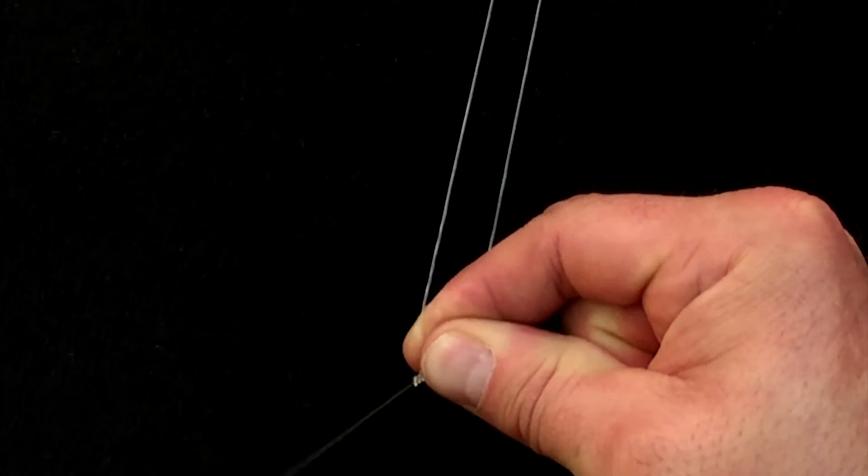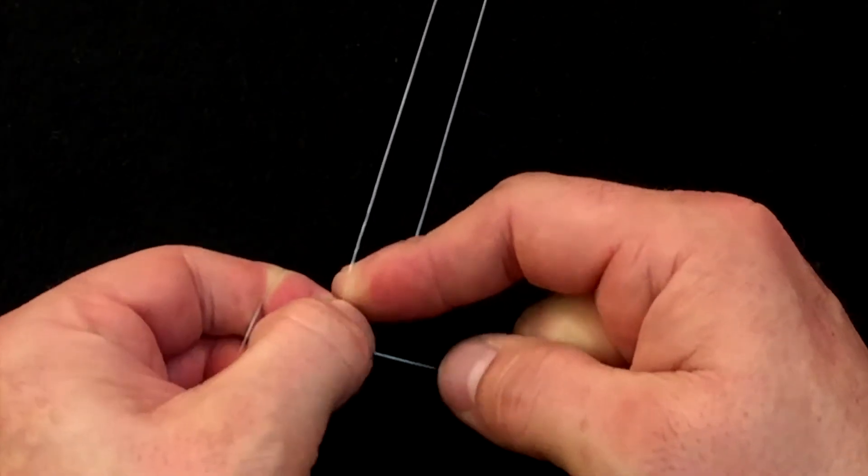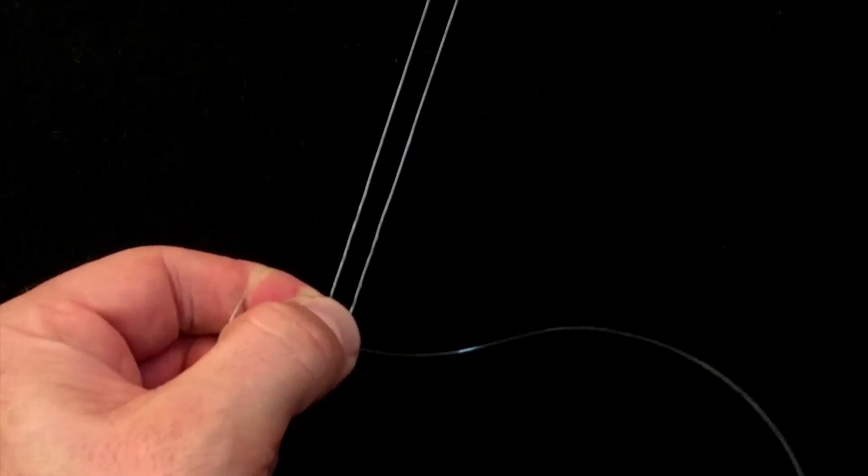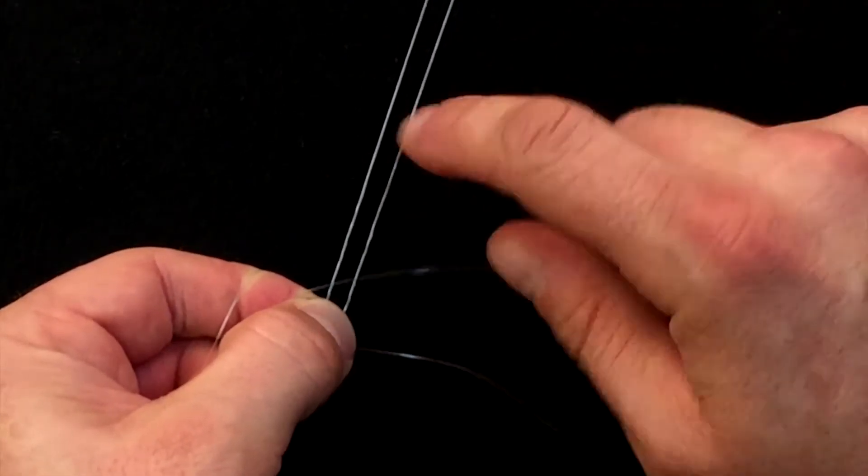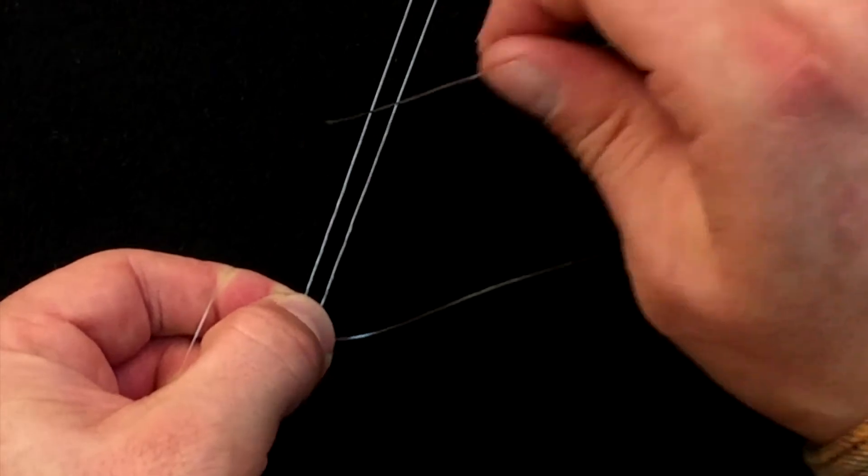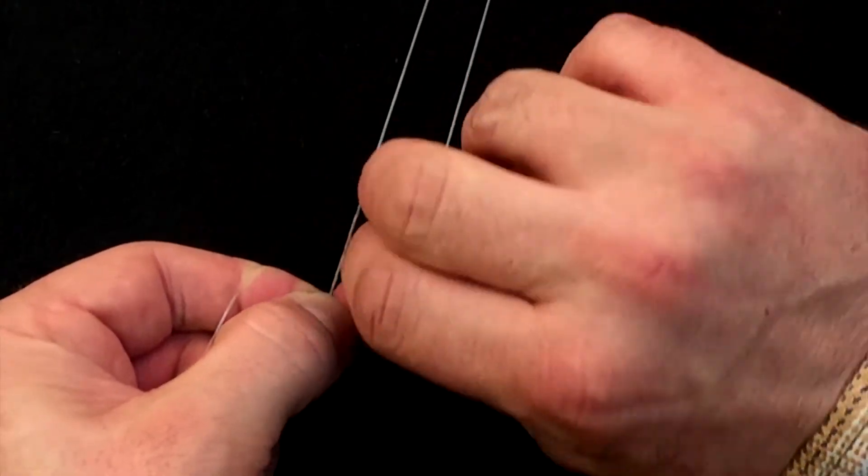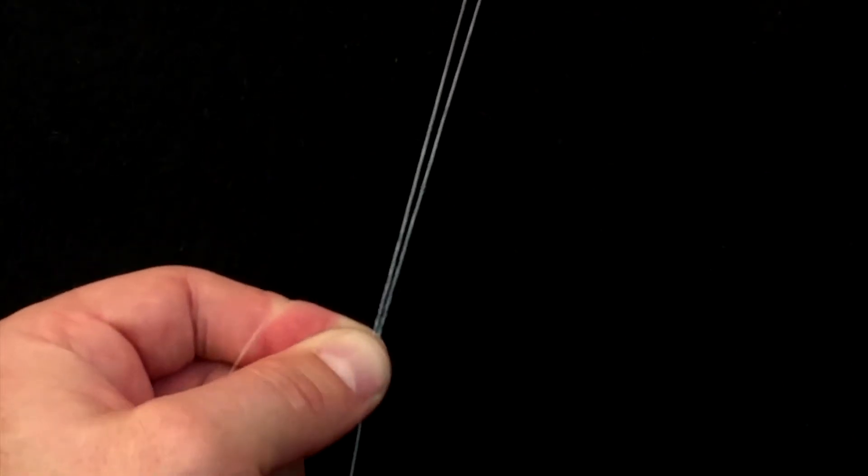Let that tension off my leader end kind of disperse. I'm going to pinch that and control it with my left hand now, and I'm going to take my tag end and go on the inside leg, the leg that's facing me, and tie a half hitch to secure it.